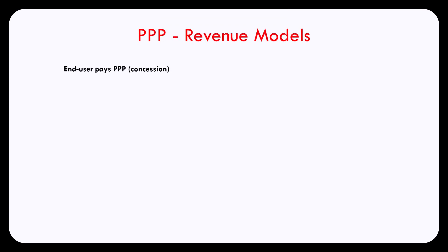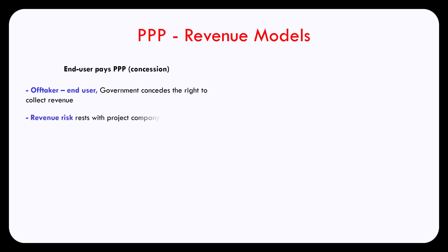Let's take a look at the end-user pays model. In this model, the off-taker is an end-user. The government concedes the right to collect the revenue to the private company, which builds and operates the infrastructure project. In this type of model, the revenue risk rests with the project company, since it is collecting revenue directly from end-users. In situations where revenue projections are reliable, depending on the jurisdiction and other supporting factors, these types of projects may be considered bankable from the lender's point of view.